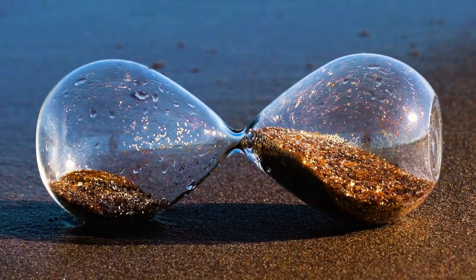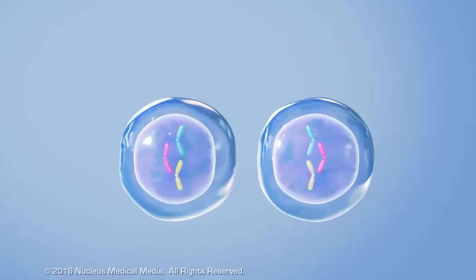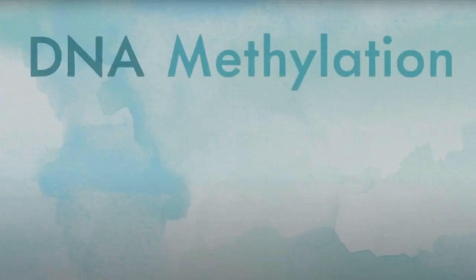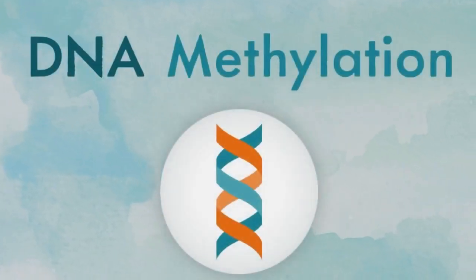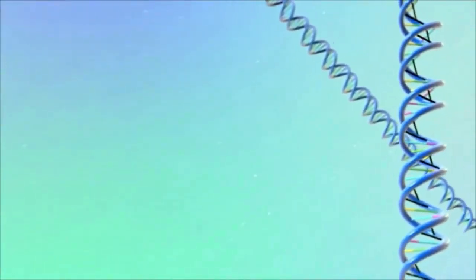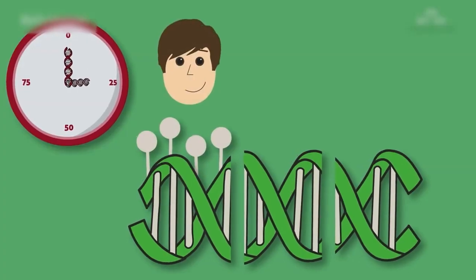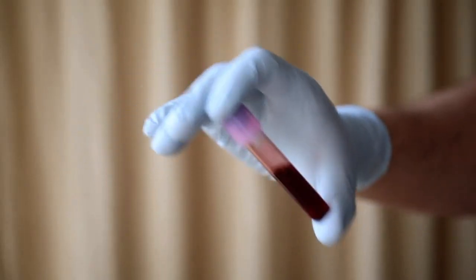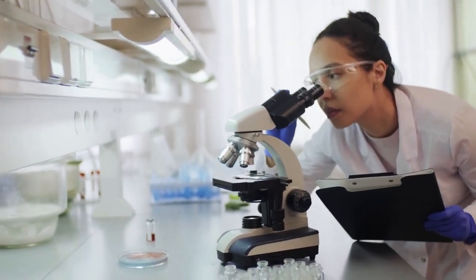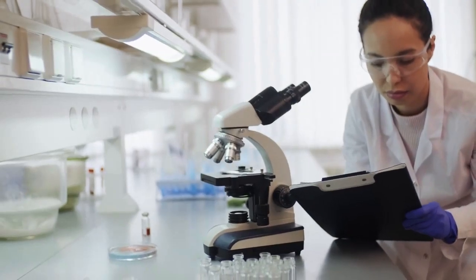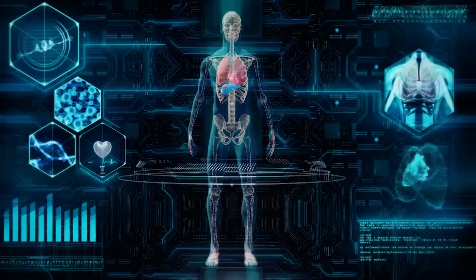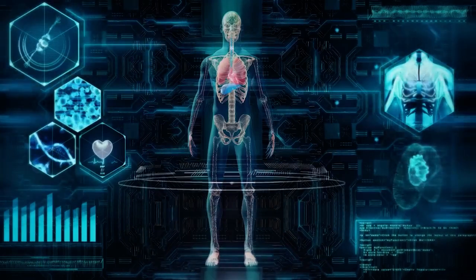And you can actually measure this disorganization, this epigenetic noise. Absolutely, this has been a major breakthrough. Since about 2013, scientists figured out that these epigenetic changes, especially DNA methylation, happen in predictable patterns as we age. You can take a sample, blood, saliva, whatever, analyze those methylation patterns, and get an estimate of your cell's functional age. Not just how many birthdays you've had, but how old your body is acting on a cellular level.